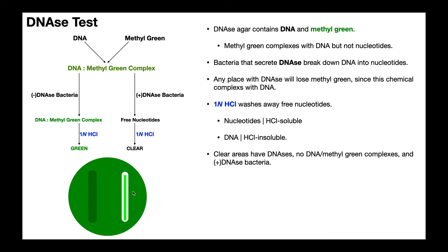Over here on the right, we have a DNase-positive organism. What would you expect if it had DNase and was able to break down the DNA? Well, there's going to be a zone of clearing or a halo. If you look around this streak, you can see what I have is white — a halo region around the streak. Why is it clear? It's clear because the DNA was broken down into free nucleotides, and the nucleotides don't complex with methyl green. So anywhere where you've lost that DNA, you're not going to have the green color, and therefore you'll see this halo around it.